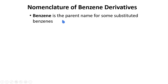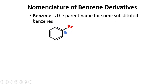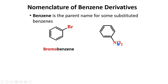How do you name benzene derivatives? Benzene is the parent name for some substituted benzenes. Here a bromine atom substitutes one of the hydrogen atoms of benzene, so this compound can be named bromobenzene. In the next case, a nitro group is the substituent, and we call this nitrobenzene.